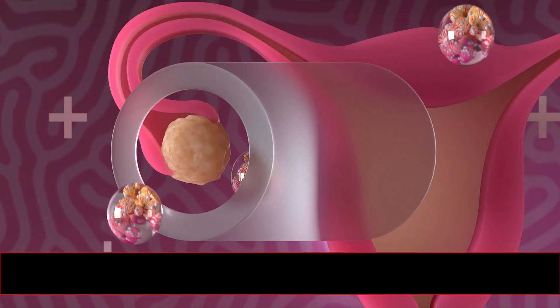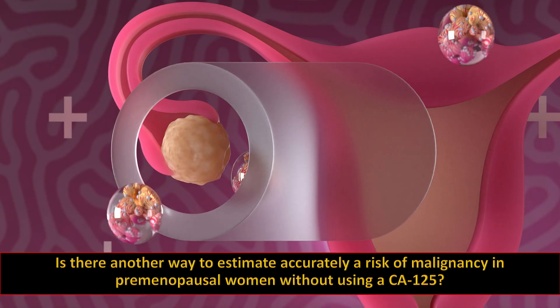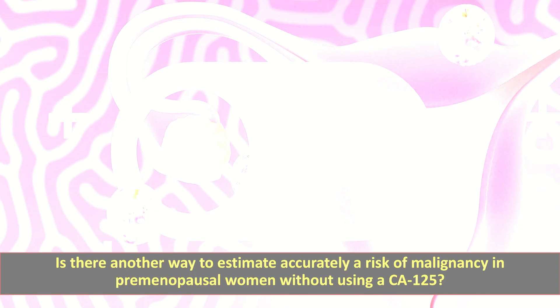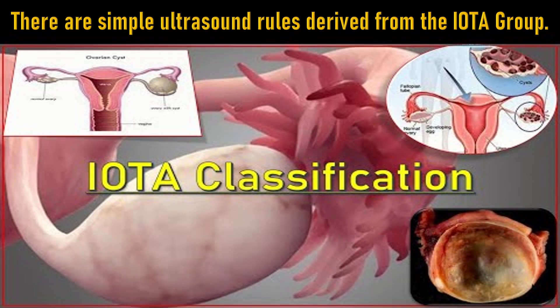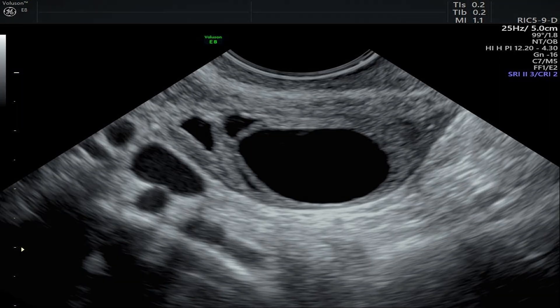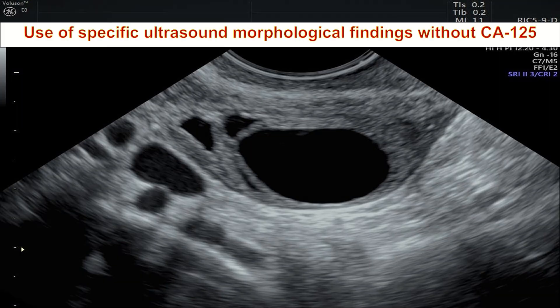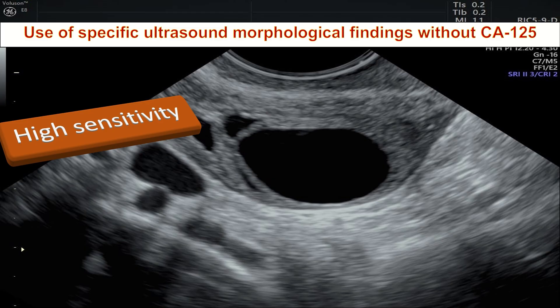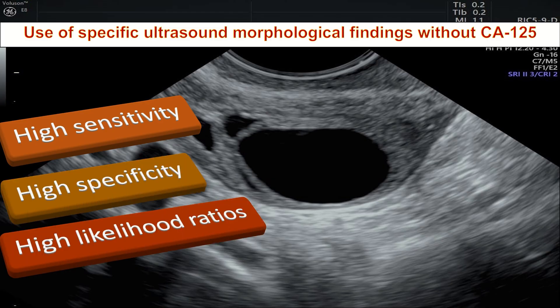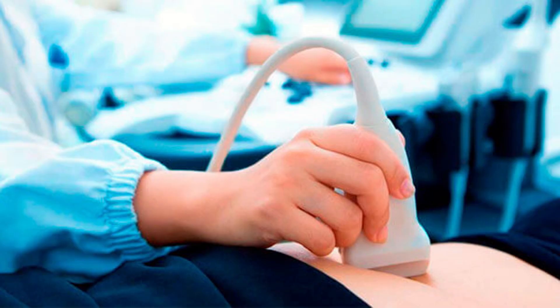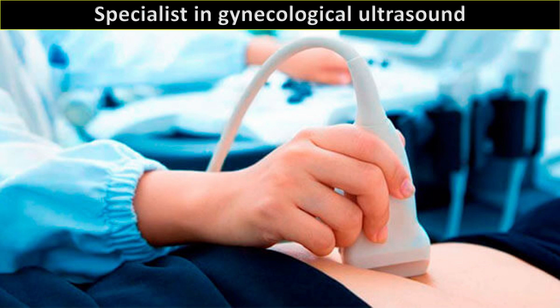There are also simple ultrasound rules derived from the IOTA group. The use of specific ultrasound morphological findings without CA-125 has been shown to have high sensitivity, specificity, and likelihood ratios. If a mass is not clearly classifiable from these rules, further investigation by specialists in gynecological ultrasound is appropriate.